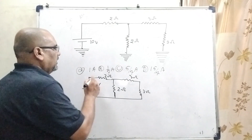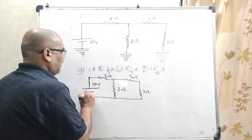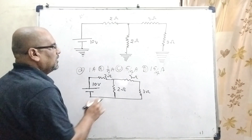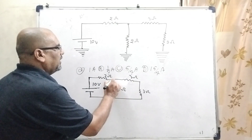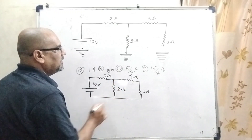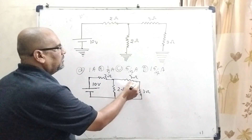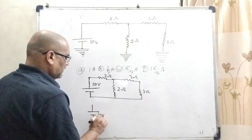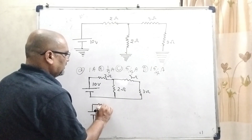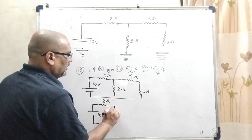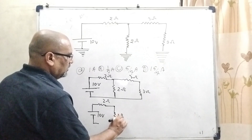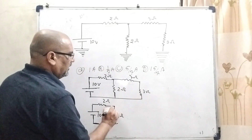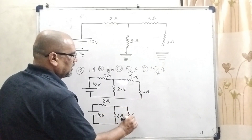Now, let us first find out the total amount of current flowing in this circuit, so let us calculate the effective resistance. This 3 ohm and 3 ohm are in series. So again redrawing this circuit: this is 2 ohm, here 2 ohm, and 3 and 3 now become 6 ohm.